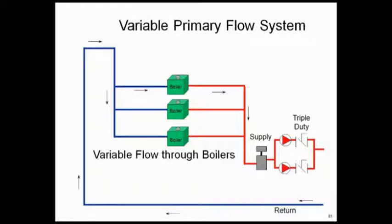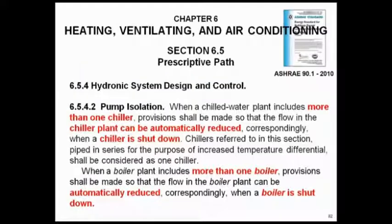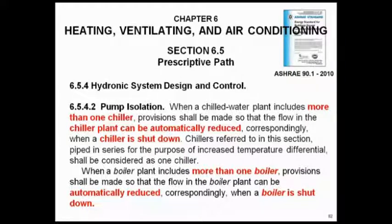The first question you'll have to deal with in variable primary flow — with one set of pumps pumping through everything — brings us to ASHRAE 90.1 2010. There's a very important piece here you need to be aware of. Most of us know about pump isolation on chiller plants — when you cut a chiller off, you're supposed to stop flow through it. But the last paragraph of this code section very clearly says the same thing applies to boilers: if we have more than one and we're cycling them on and off, we've got to reduce or shut off flow when we cut a boiler off. They don't want flow through a boiler that's not running.